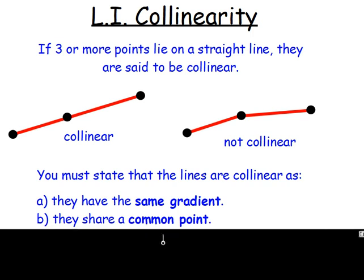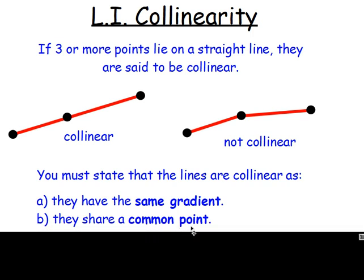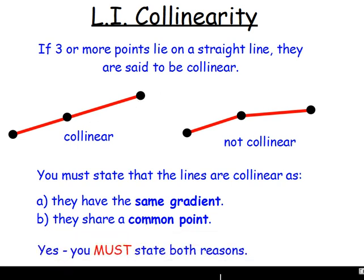And what it is, is you have to say that there is a common point between the two gradients that you're working out. So you can see here that if this gradient is the same as this one, well, because you're using this point and working out them both, then you could say the points were collinear. They're going to lie in a straight line. And Aaron, just for you, yes, you must state both reasons if you were doing this.